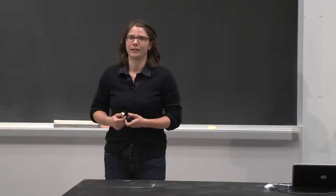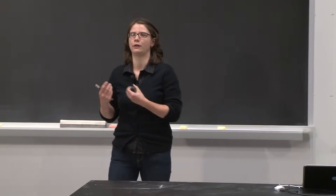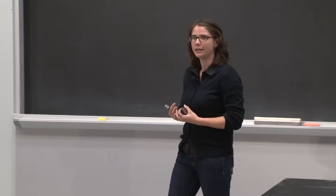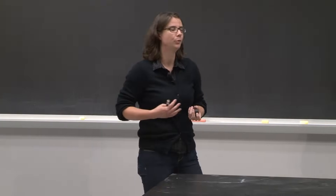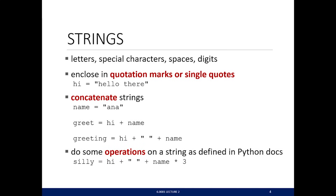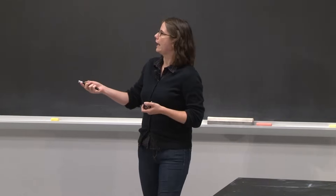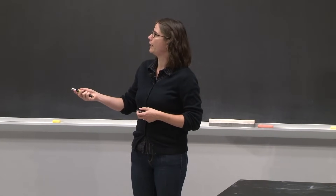Let's begin by looking at strings. Strings are a new object type. We've seen integers, which are whole numbers; floats, which are decimal numbers; and Booleans, which are true and false. Strings are going to be sequences of characters — letters, digits, special characters, and spaces. You tell Python that you're talking about a string object by enclosing it in quotation marks. Here, I'm creating an object whose value is 'hello there', and Python knows it's a string because we're enclosing it in quotations — either double or single quotes.